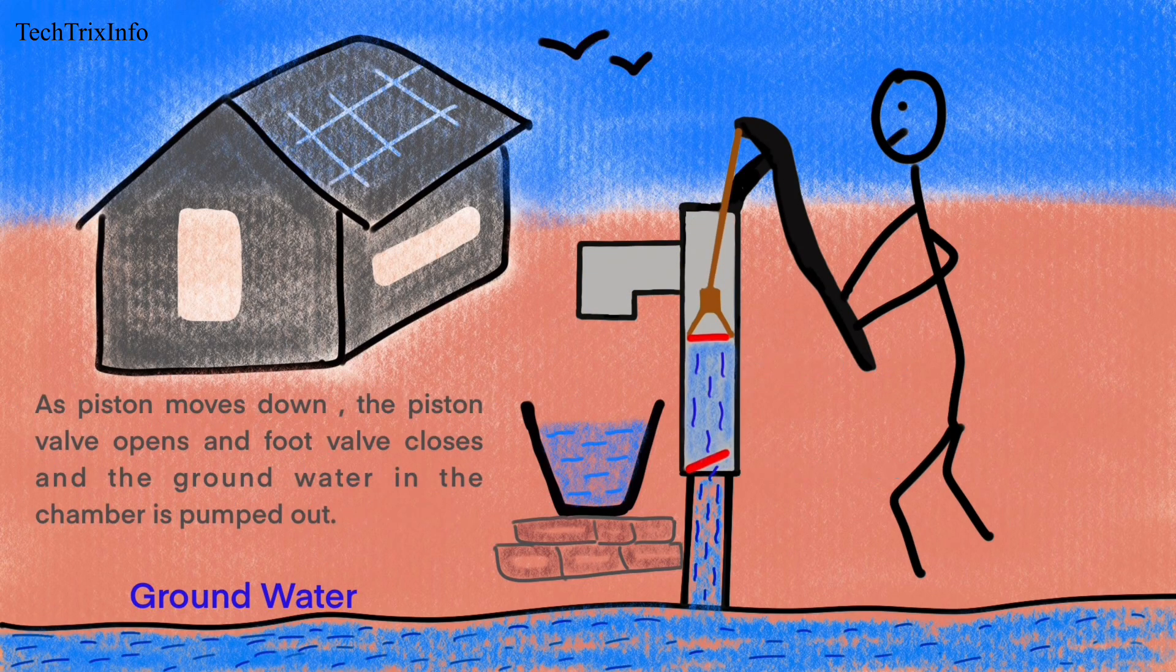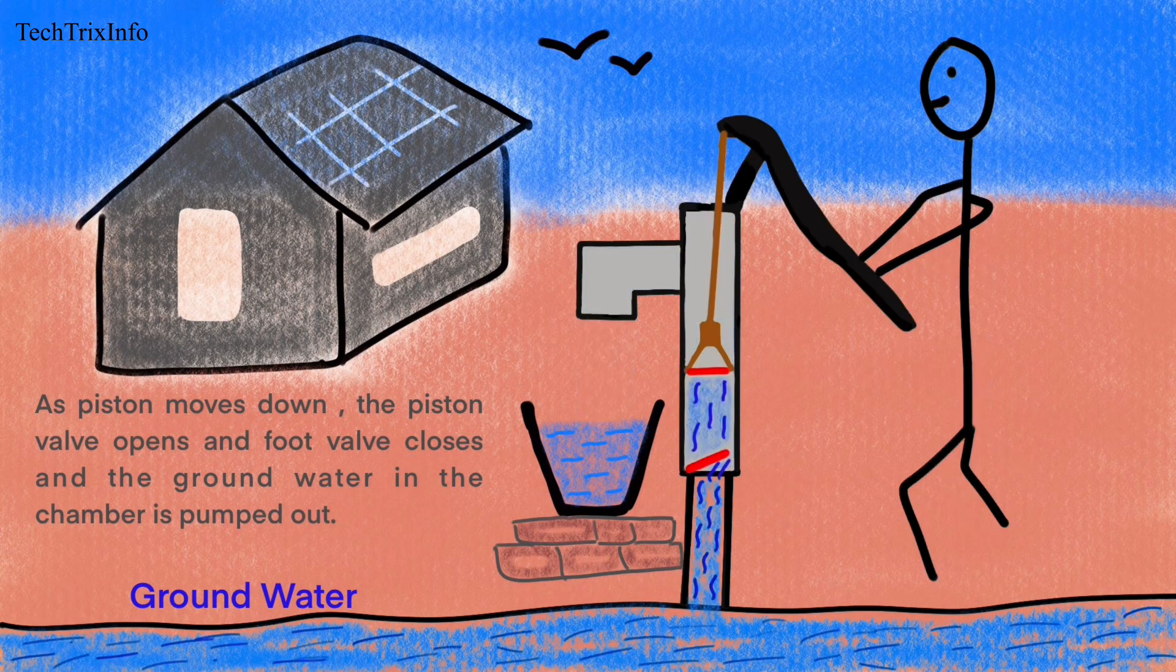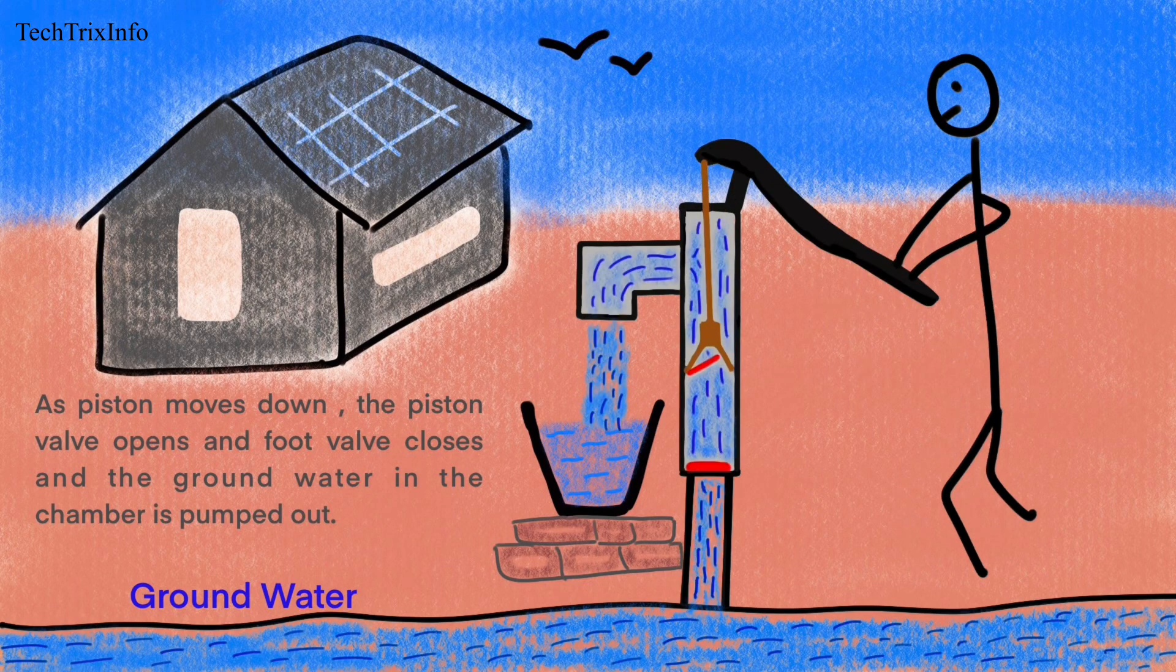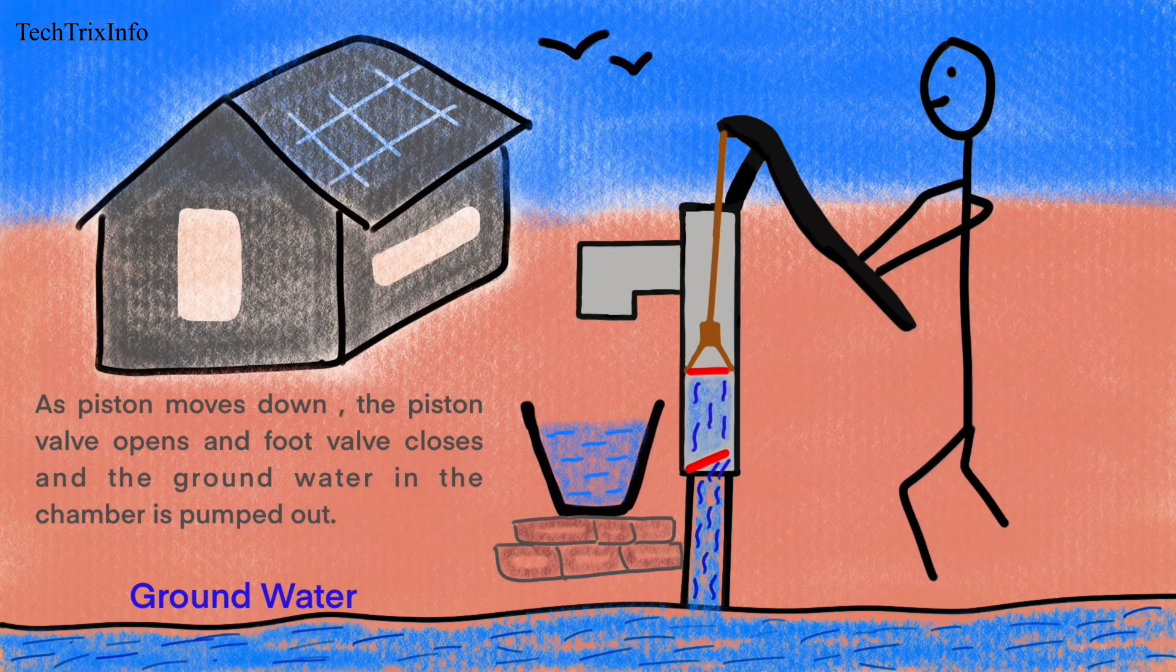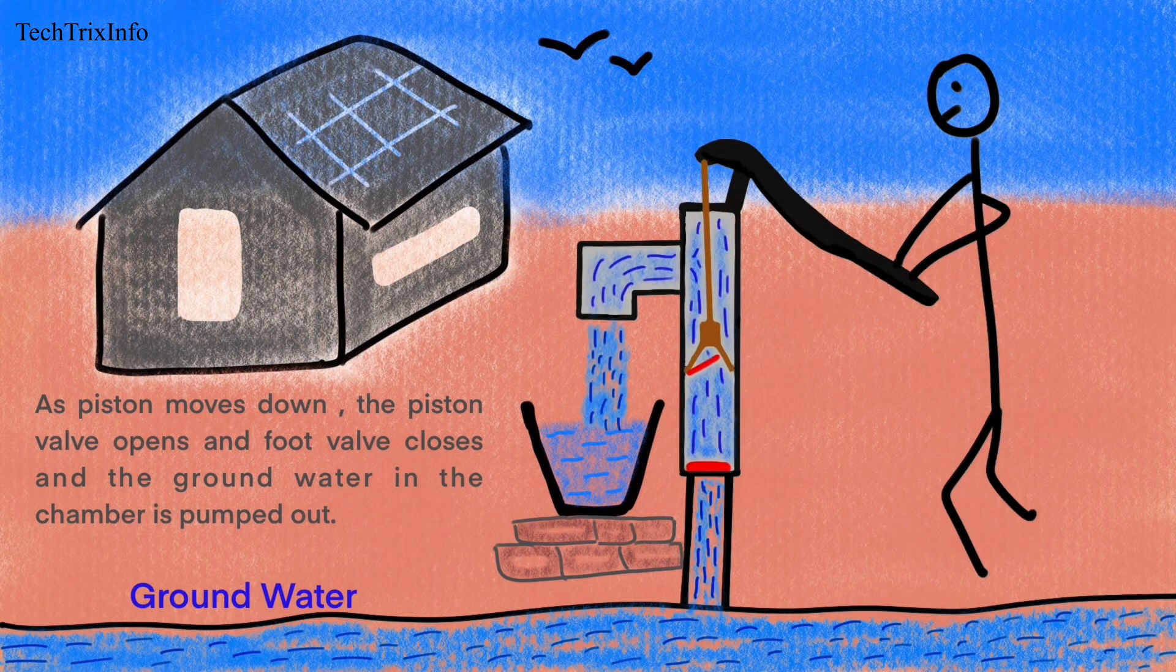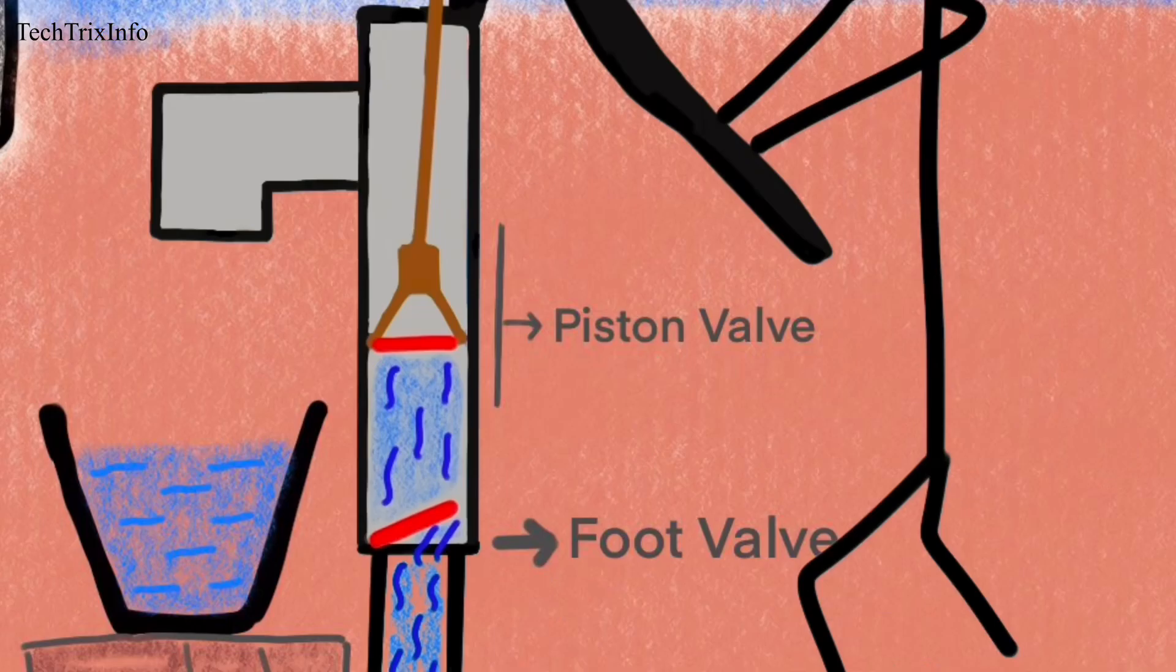As the piston moves down, the piston valve opens and the foot valve closes, as you can see here. The groundwater in the chamber is pumped out. Let's have a closer look here.